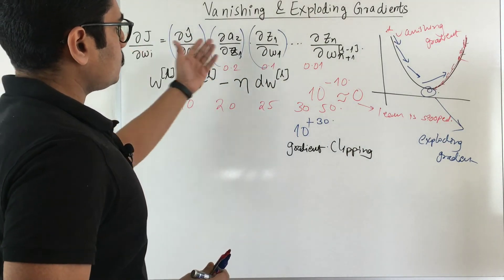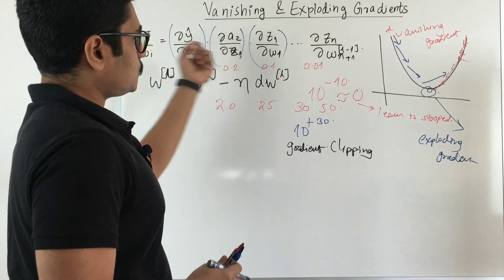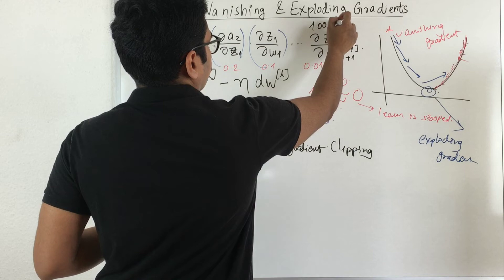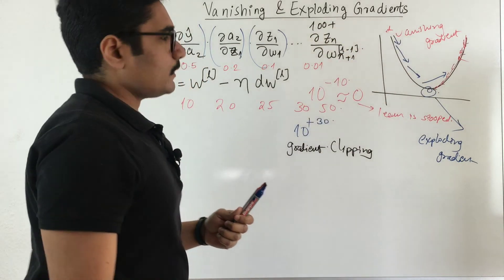You have this particular multiplication of different small minute derivatives. Say these are 100 in numbers, 100 or more gradients are there. You keep a threshold there.